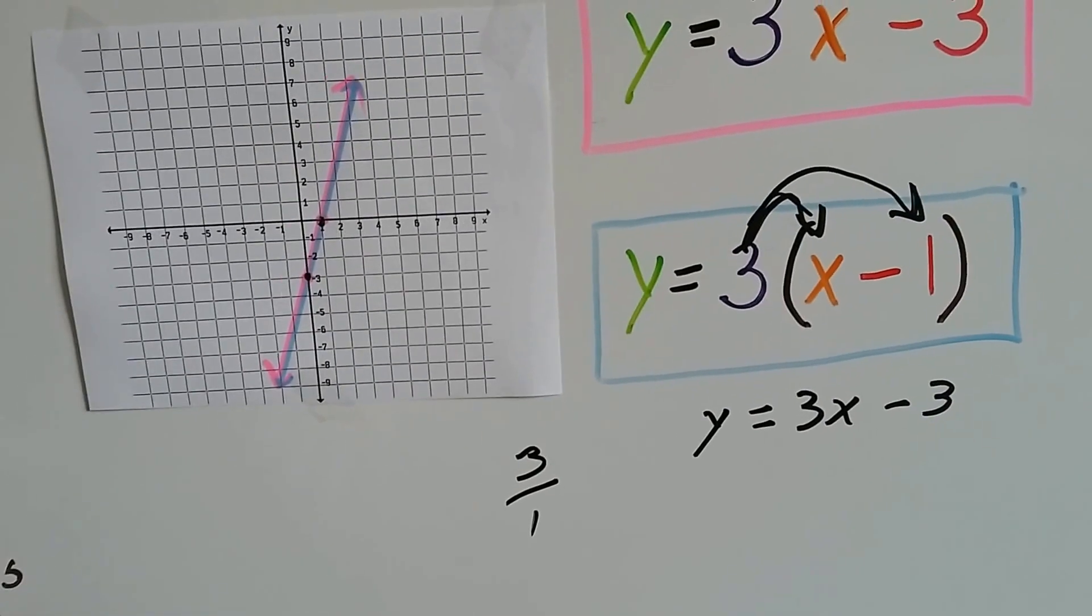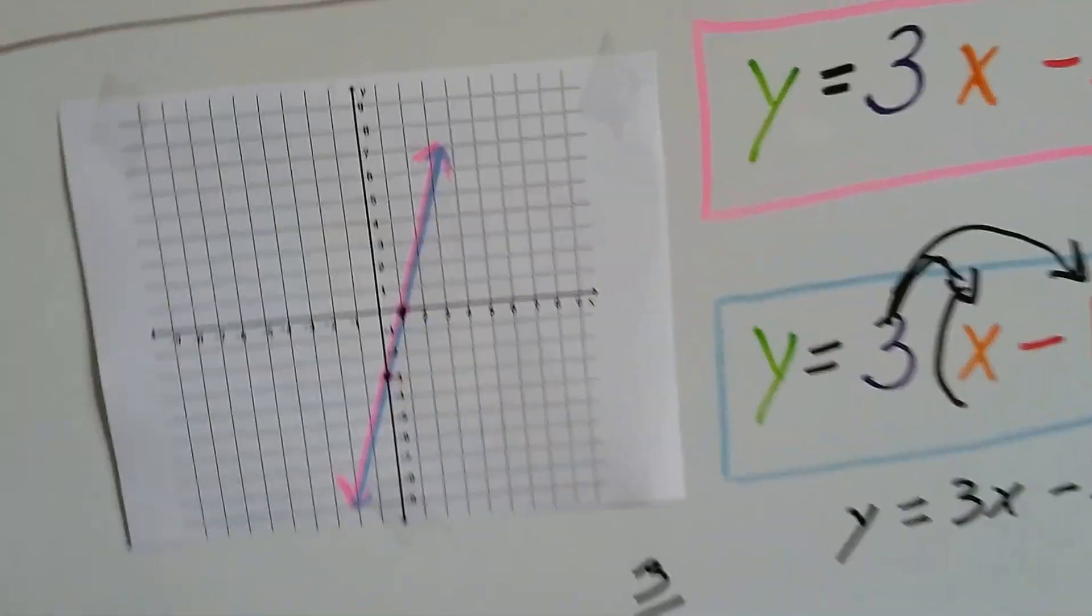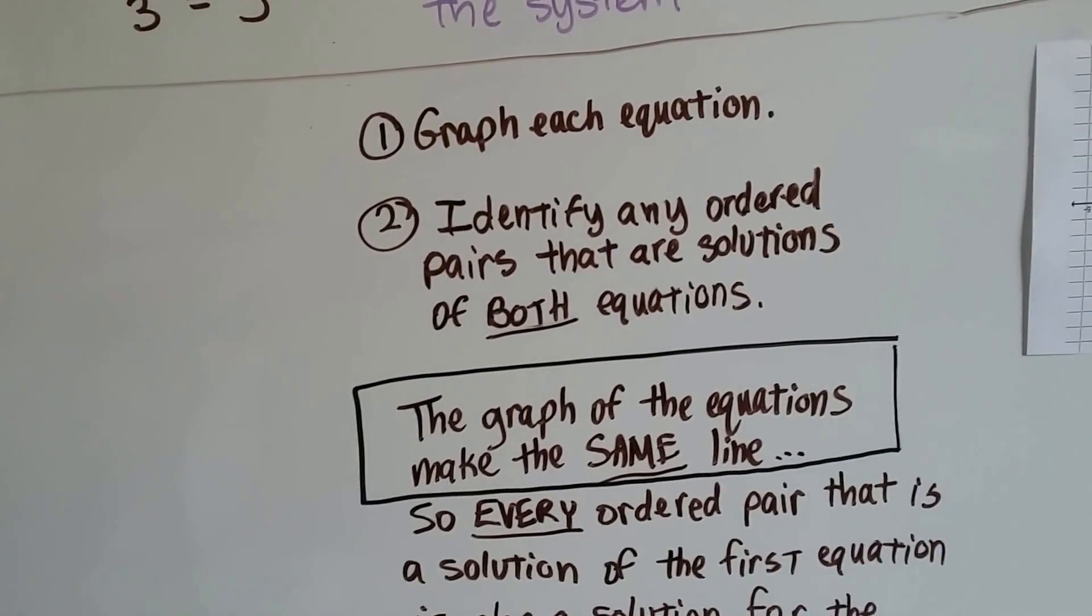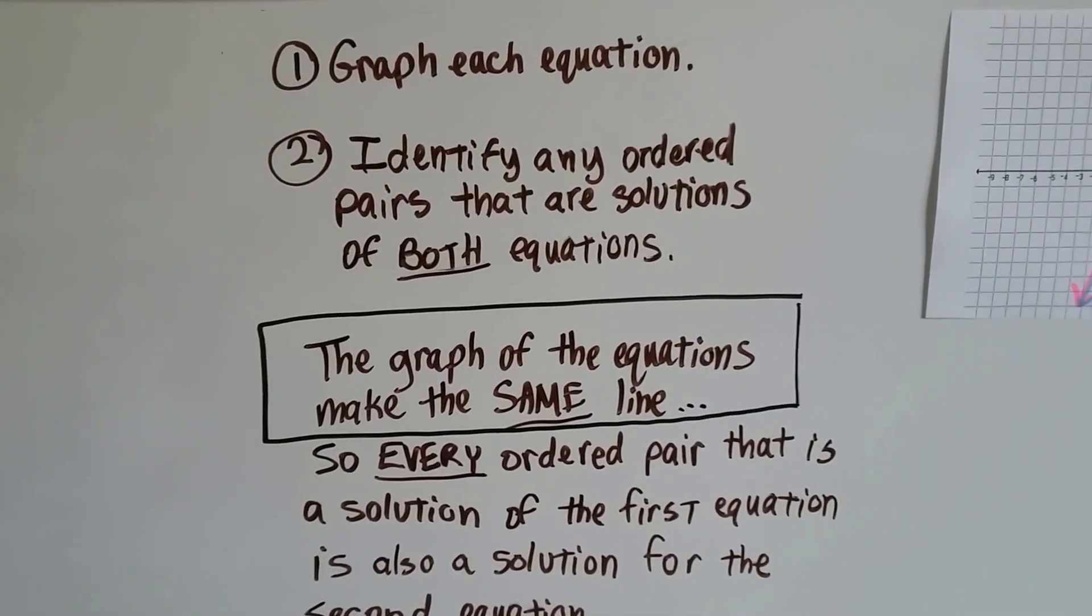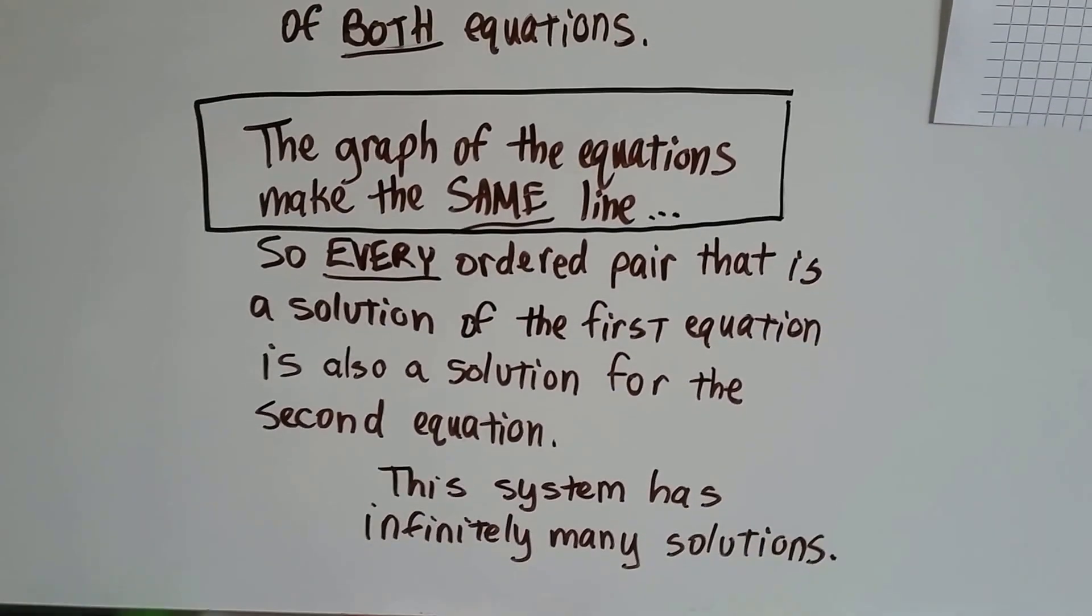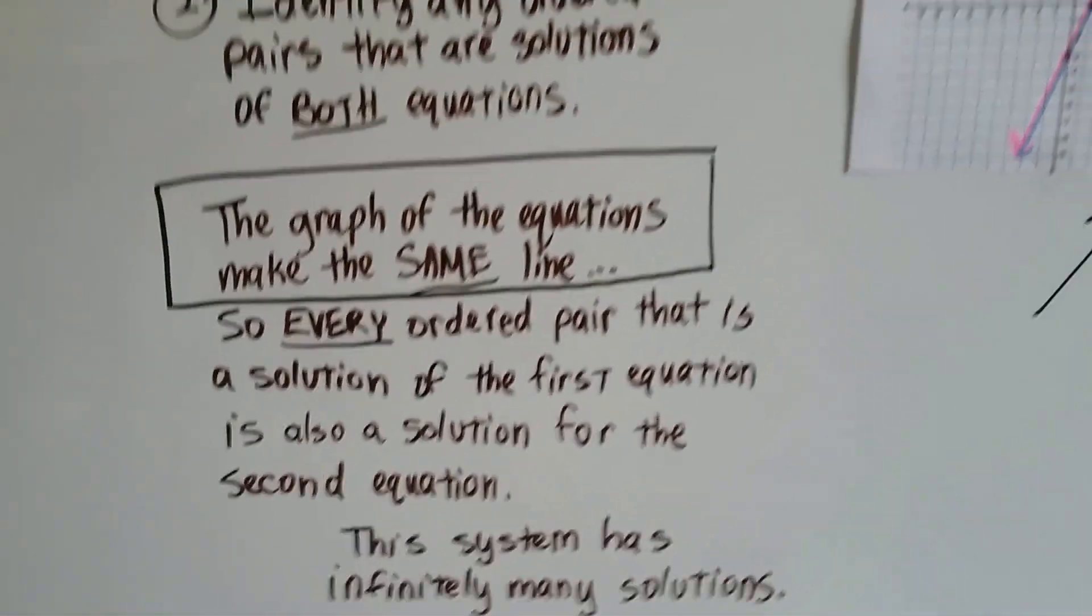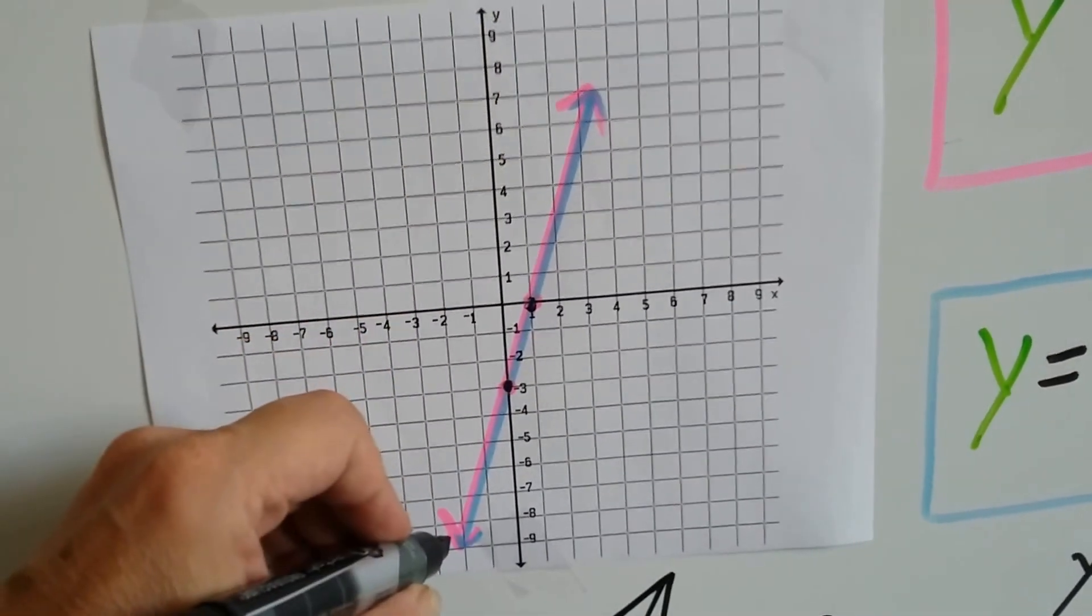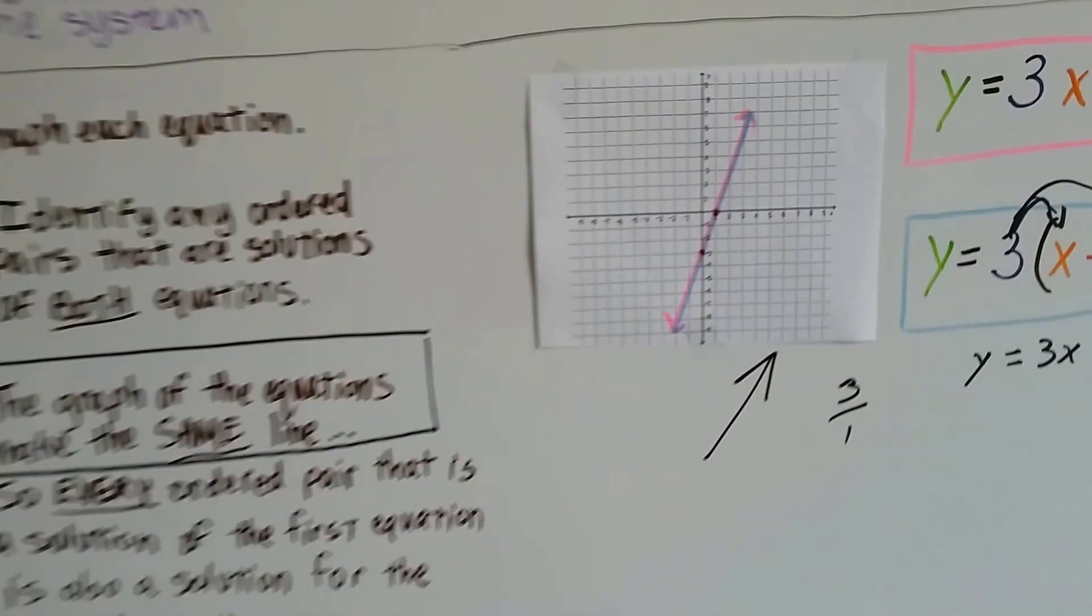It's a positive 3, so it's a positive slope, rising to the right. We identified any ordered pairs that could have been solutions for both equations, or tried to, and we didn't get any because the graphs of the equations make the exact same line. Every ordered pair that is a solution of the first equation is going to be the solution for the second one. This system has infinitely many solutions. We could put a tiny microscopic dot anywhere along here and it would be a solution for both, because they're on the same line. We could pick any point on that line.